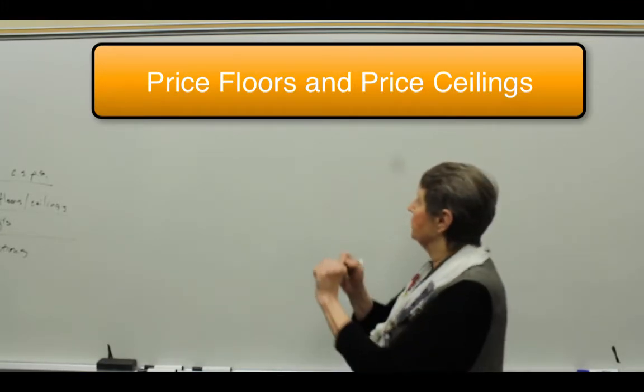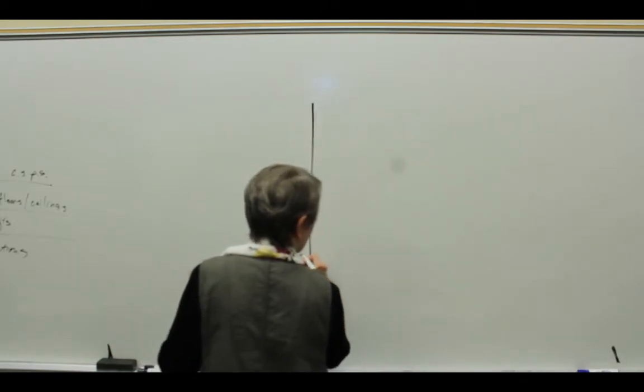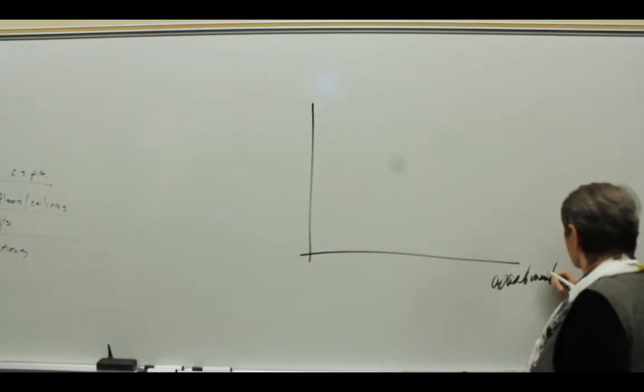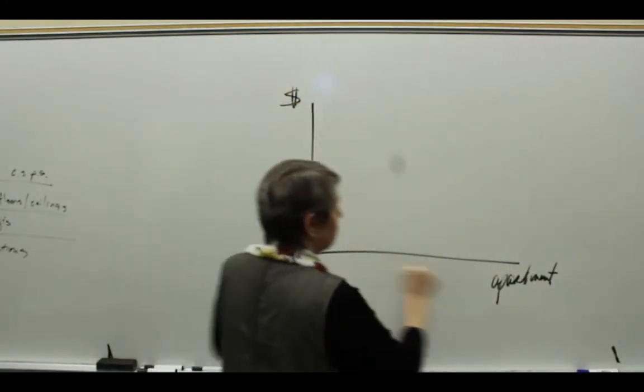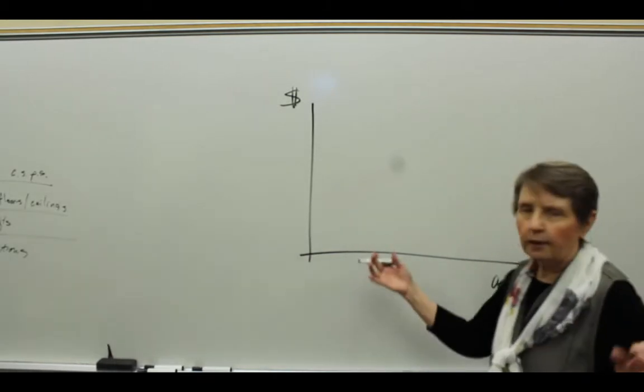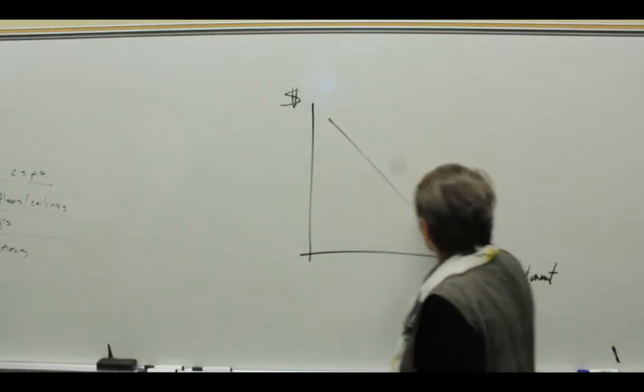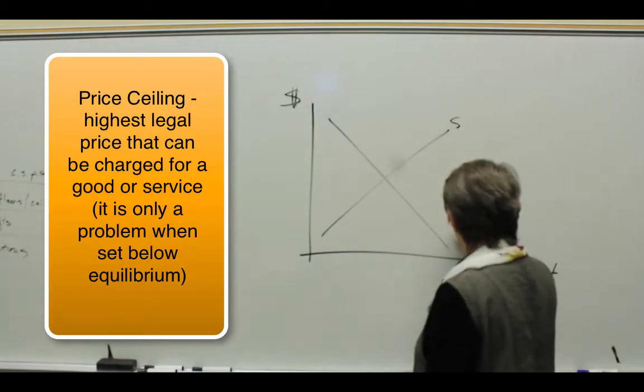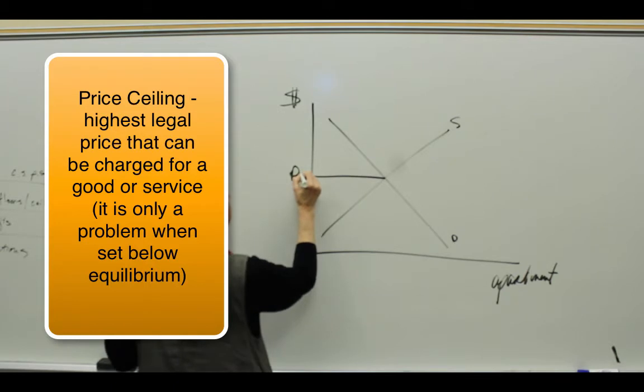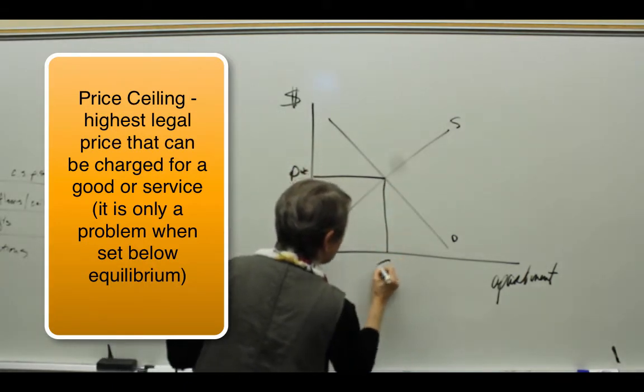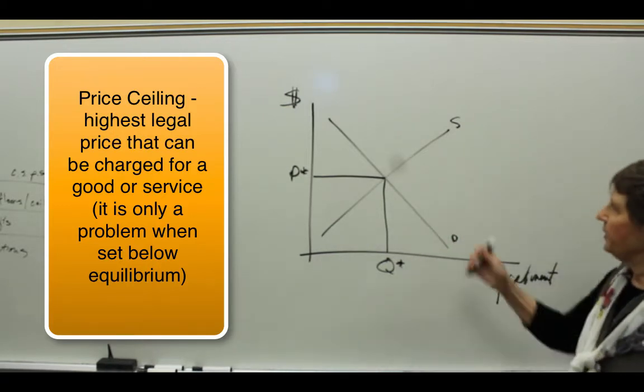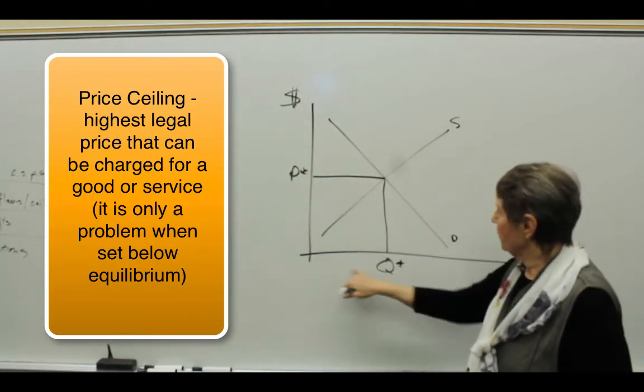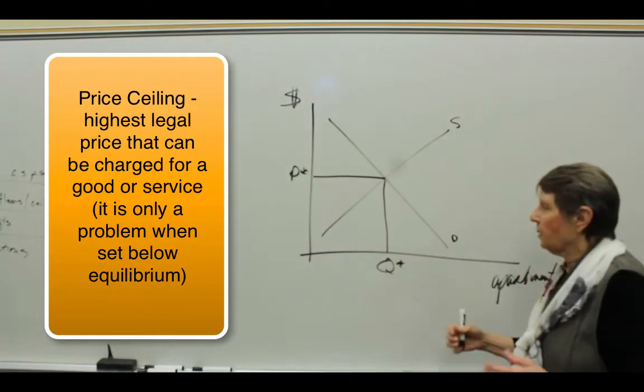Let's look at the market for apartments. We'll have the average apartment, you know, 800 square feet. There is a demand for apartments, there is a supply of apartments. Here's the equilibrium price P star. Here's the number of apartments that are rented between apartment owners and people seeking to rent an apartment. So we have this many apartments, and this is the rent.